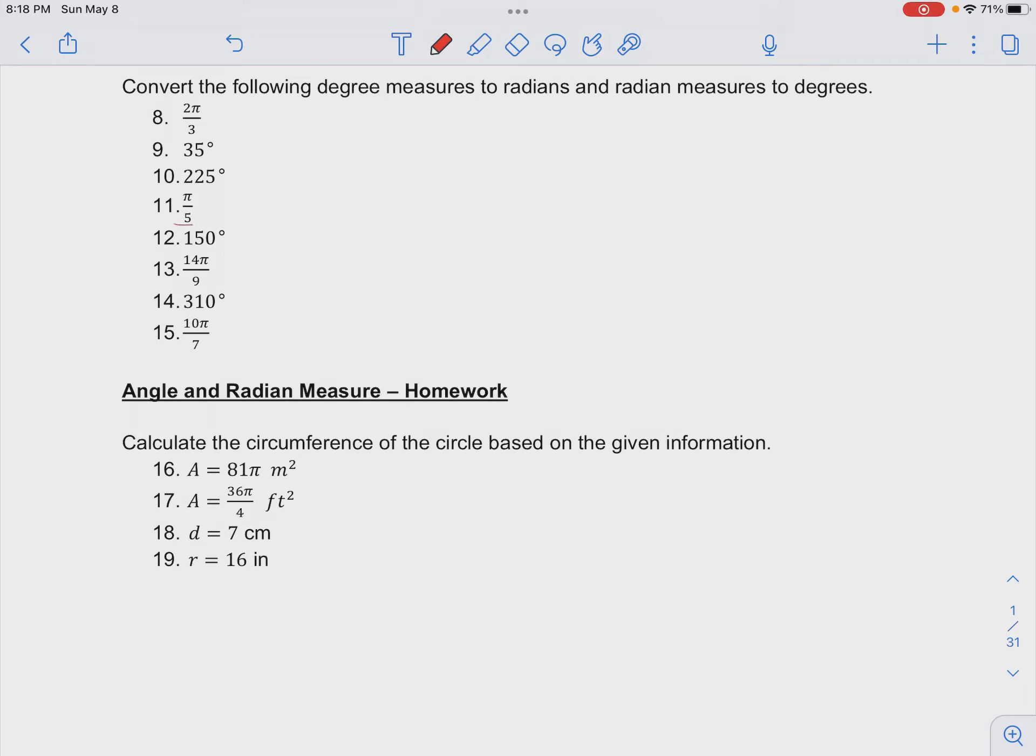So if we have π over 5 radians, converting this to degrees, we're going to have to multiply by our conversion factor.